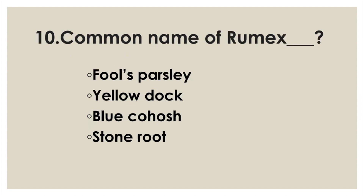Common name of Rumex: Option A: False parsley. Option B: Yellow dock. Option C: Blue cohosh. Option D: Stone root. Answer: Option B, Yellow dock.